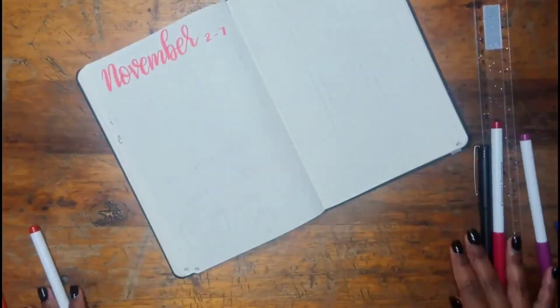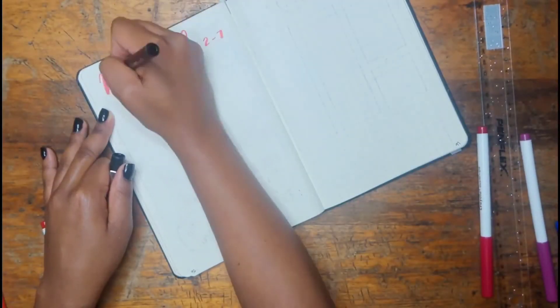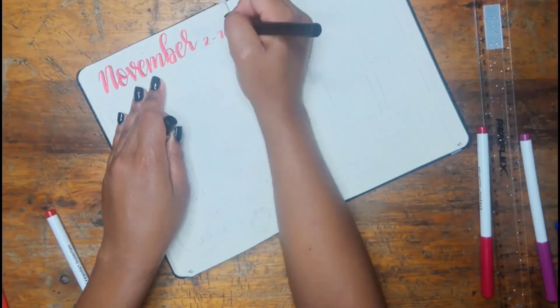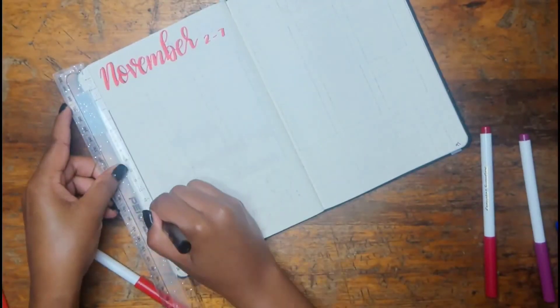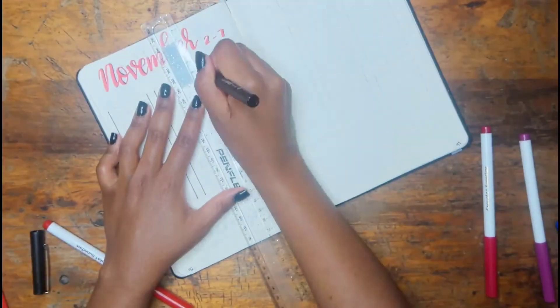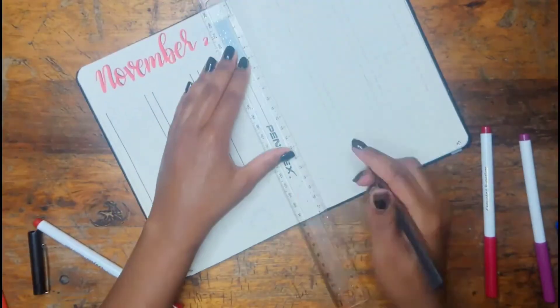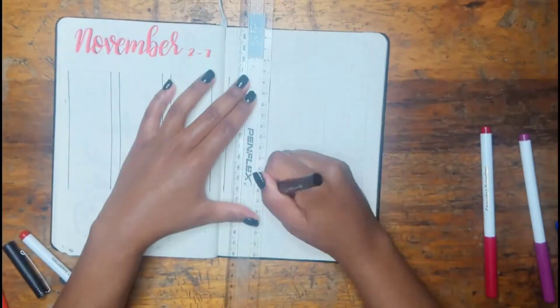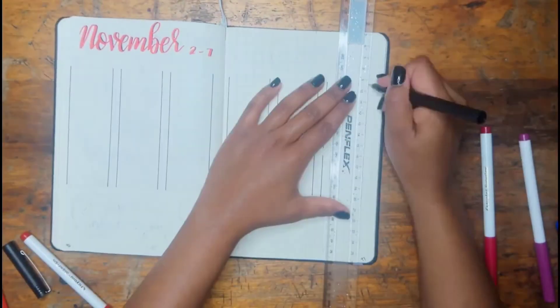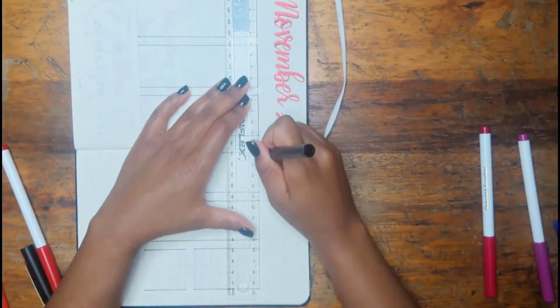Next we have my first weekly spread. I mentioned last month that I have decided to make weekly spreads for the whole month. I don't know how long this will last, maybe I'll change my mind later, but weekly spreads usually take like five to ten minutes for me.